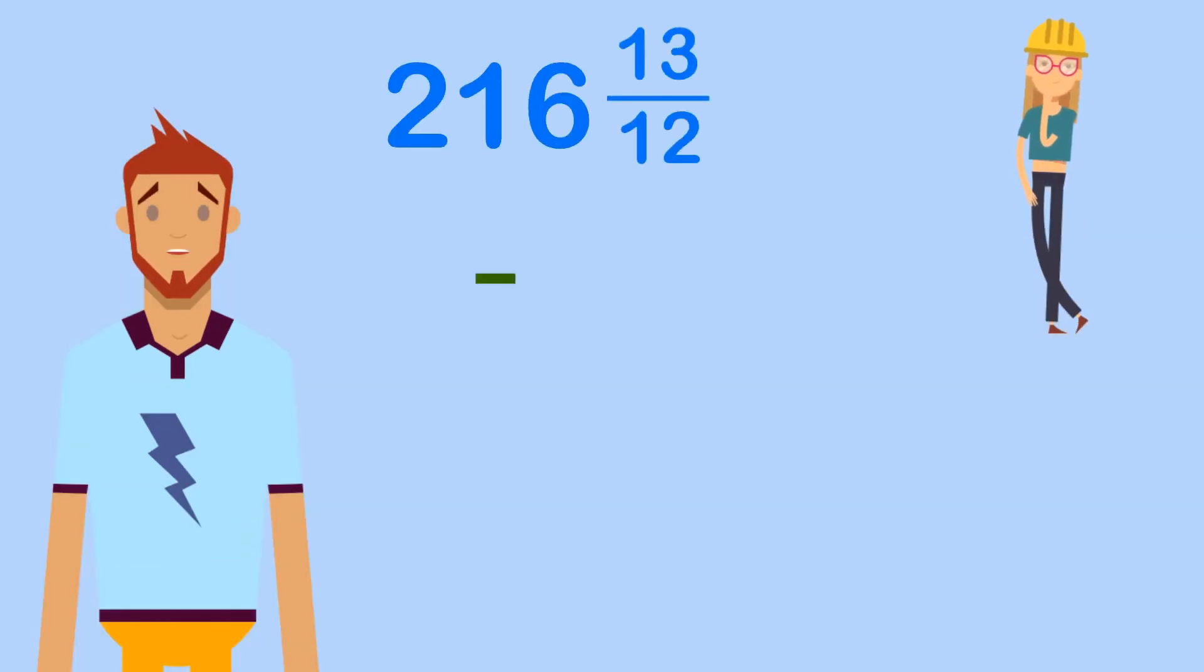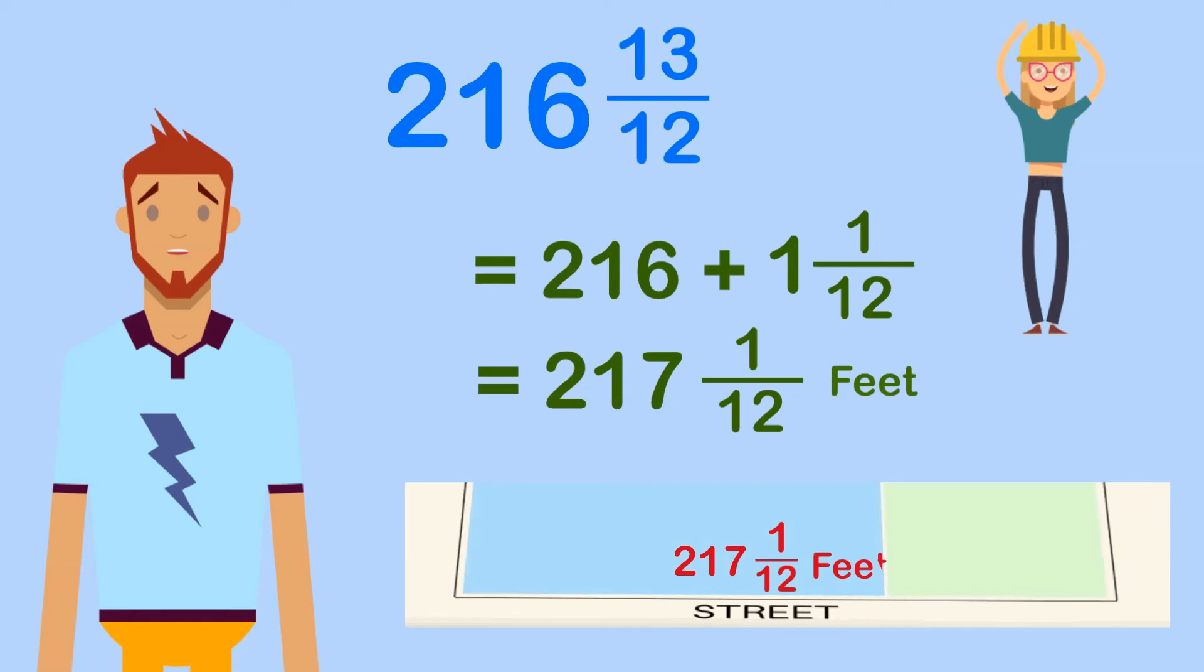Let's simplify our previous answer of 216 and 13/12. How many 12s are there in 13? One. And we have 12 as our denominator. For our numerator, 13-12=1. Our final answer is 217 and 1/12. Now Jane knows that the total frontage of both lots is 217 and 1/12 feet.